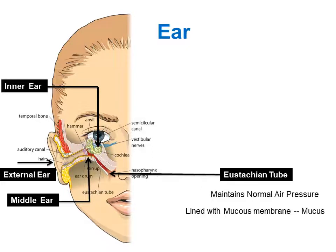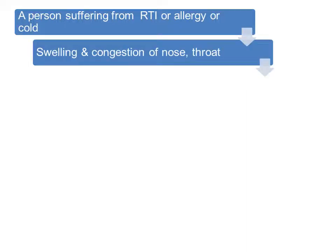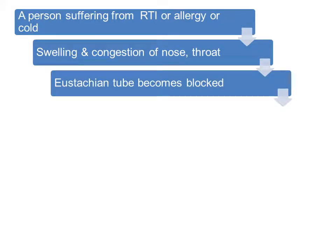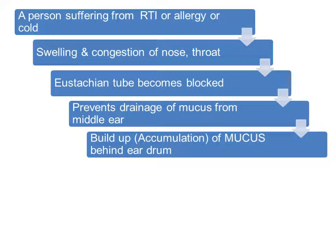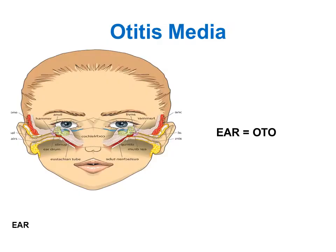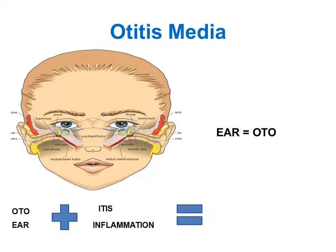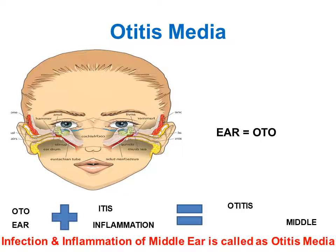The Eustachian tube is lined with mucous membrane and drains the mucous of the middle ear. When a person is suffering from a respiratory infection, allergy or cold, there is swelling and congestion of the nose and throat, causing the Eustachian tube to become blocked. This prevents drainage of mucous from the middle ear, causing a buildup of mucous behind the eardrum and resulting in ear pain. This mucous is also a good place for bacteria and viruses to grow, resulting in infection of the middle ear. Ear in medicine is called 'oto', so infection and inflammation of the middle ear is called otitis media — 'media' meaning middle.